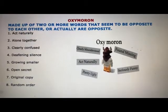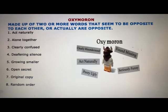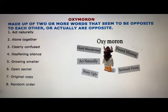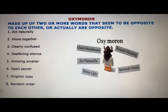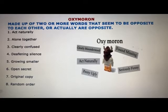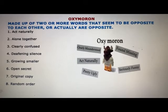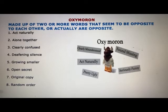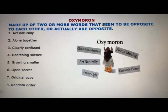The next poetic device is oxymoron. It's made up of two or more words that seem to be opposite to each other, or actually are opposite. For example: 'act naturally,' 'alone together,' 'clearly confused,' 'deafening silence.' When you see these examples, you find that they seem to be exactly opposite to each other — that is known as oxymoron.